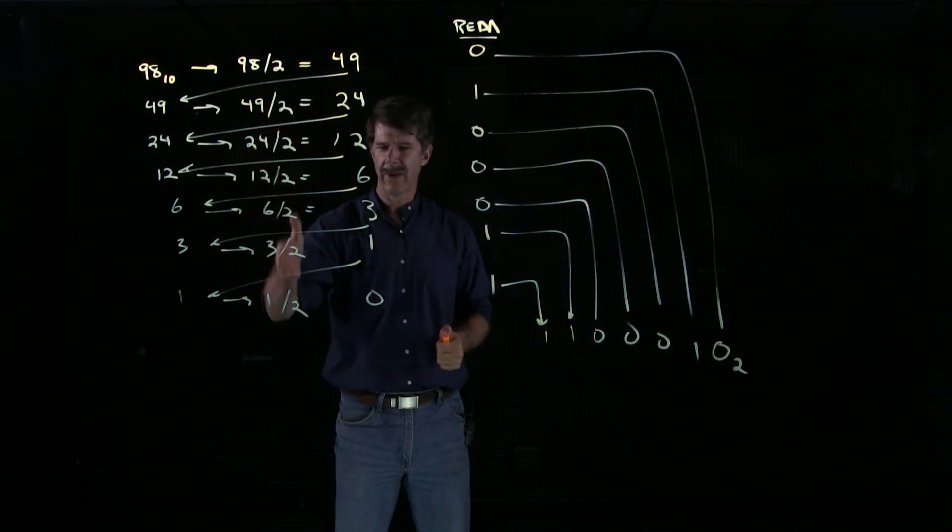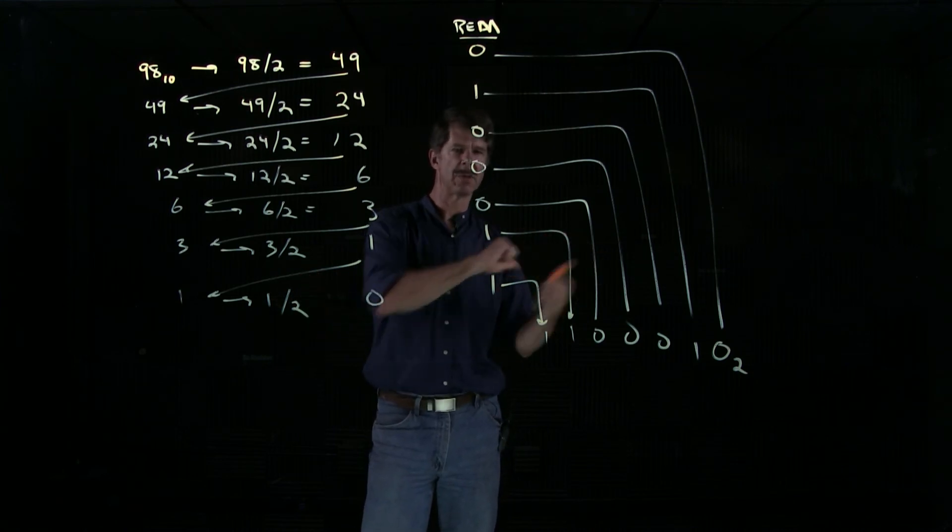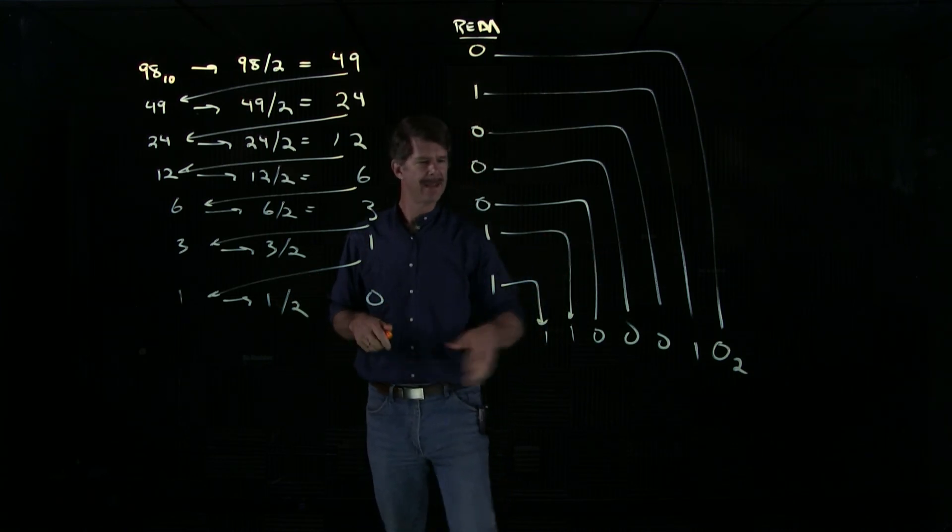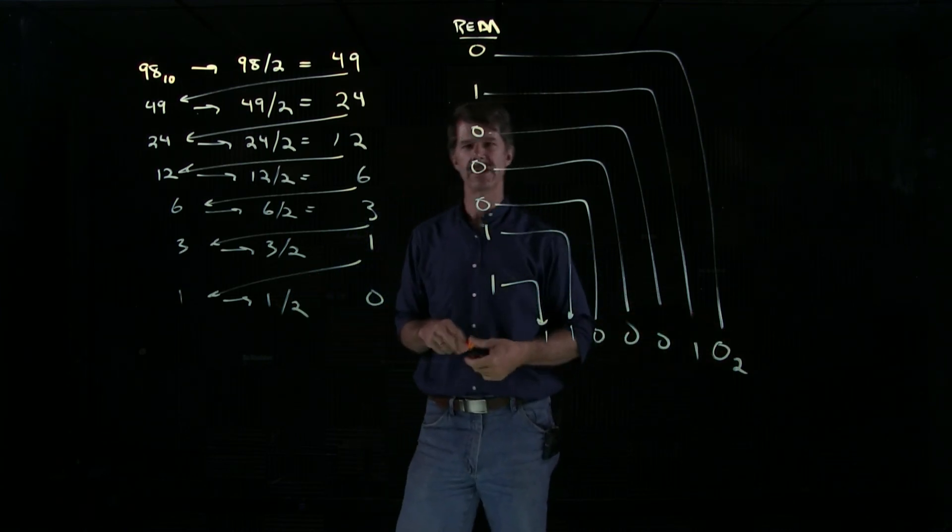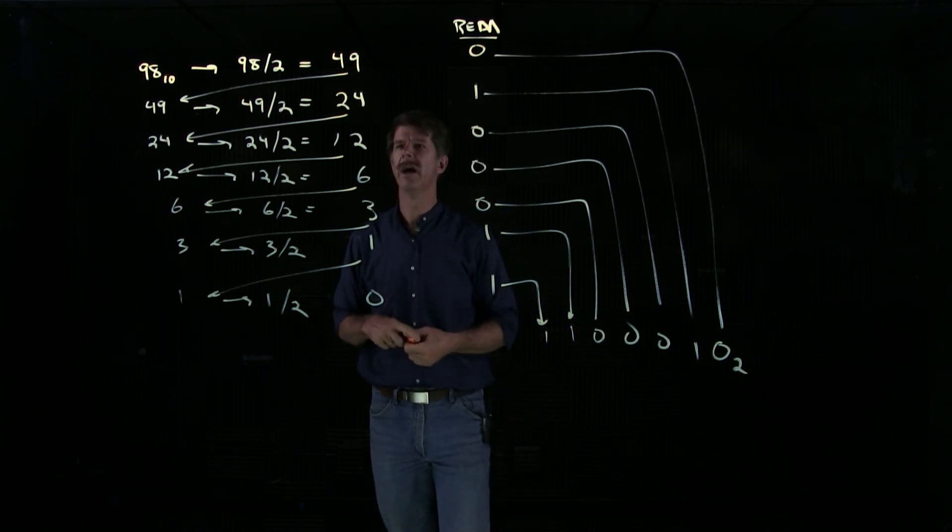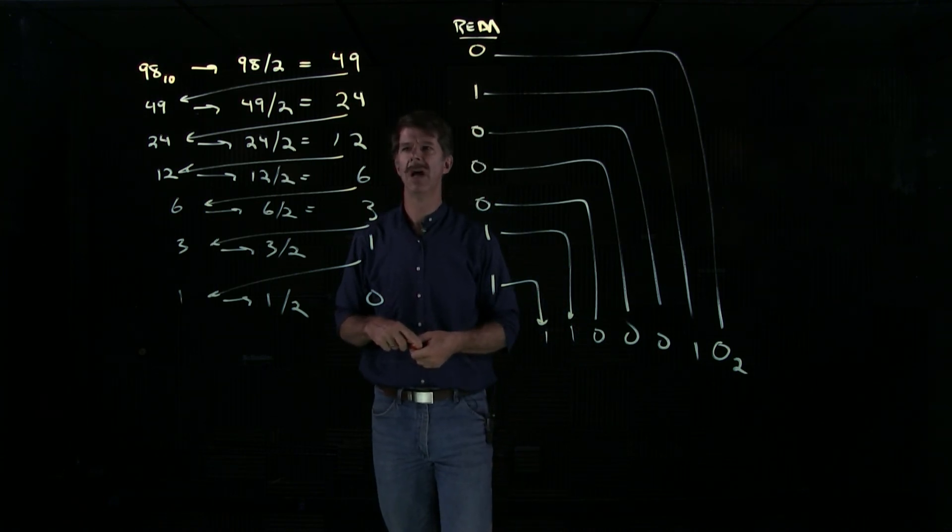Sequentially divide by 2, the remainder each time is the digit that pops off the stack, and that tells you what the number is. Simple mechanical procedure, and now you can go both ways.